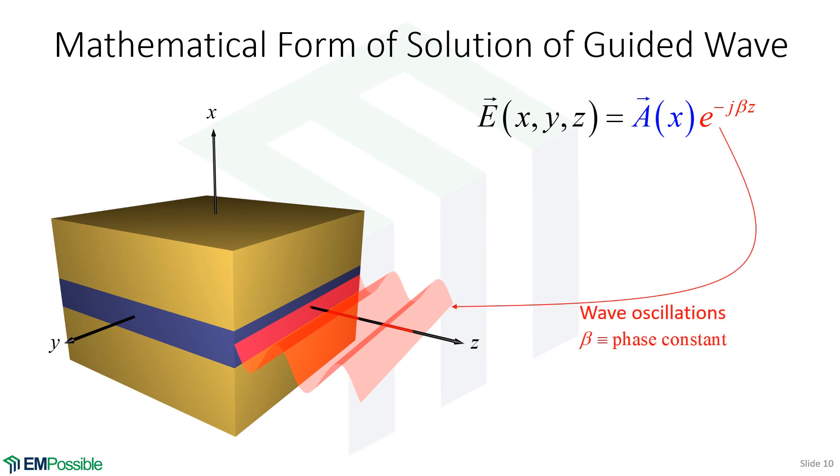This last term is a complex exponential, e to the minus j beta z, where beta is the phase constant we talked about. This describes the wave oscillations—the wiggles and how quickly it accumulates phase as it propagates. This envelope or amplitude term is only a function of x, not y, because everything's uniform in the y direction. This amplitude envelope contains pictures of our modes. A guided mode has some profile in the x direction, then it's uniform in y.